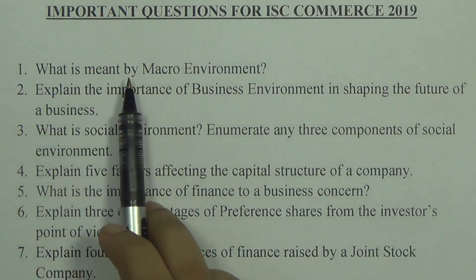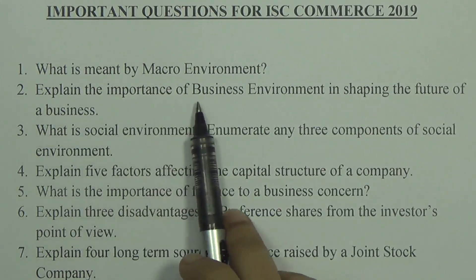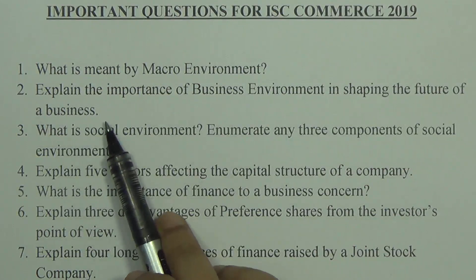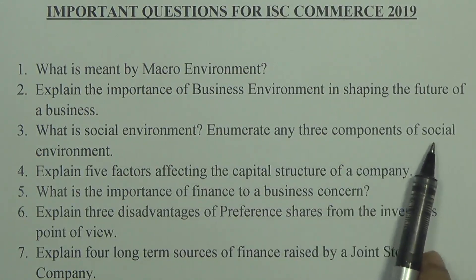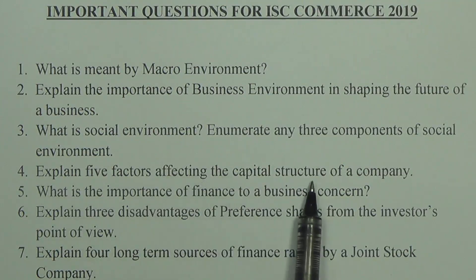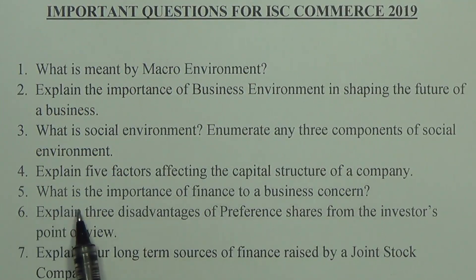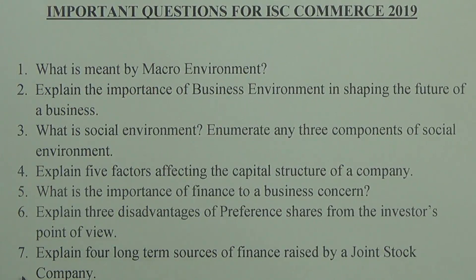Question one: What is meant by macro environment? Question two: Explain the importance of business environment in shaping the future of a business. Question three: What is social environment? Enumerate any three components of social environment. Question four: Explain five factors affecting the capital structure of a company. Question five: What is the importance of finance to a business concern? Question six: Explain three disadvantages of preference shares from the investor's point of view. Question seven: Explain four long-term sources of finance raised by a joint stock company.